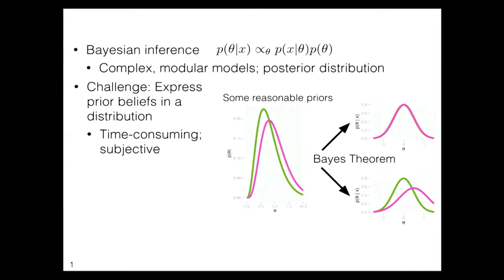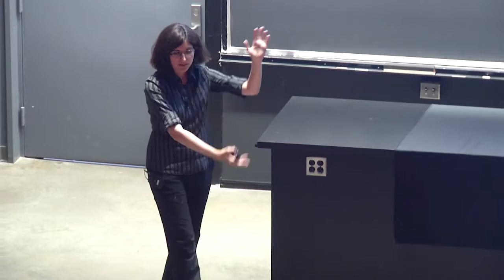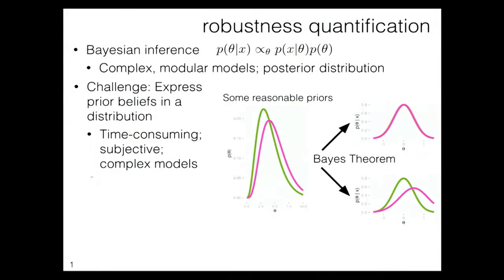We want to quantify how robust our inference is to the choice of prior. All of these problems are exacerbated in modern complex models, where parameters don't necessarily correspond to something physically meaningful. This robustness quantification isn't a new idea — people have wanted it for years and decades, yet it's rarely used in practice. When it is used, it typically takes the form of running the full Bayesian posterior inference for some hyperparameters and then for others, but it's not very systematic.